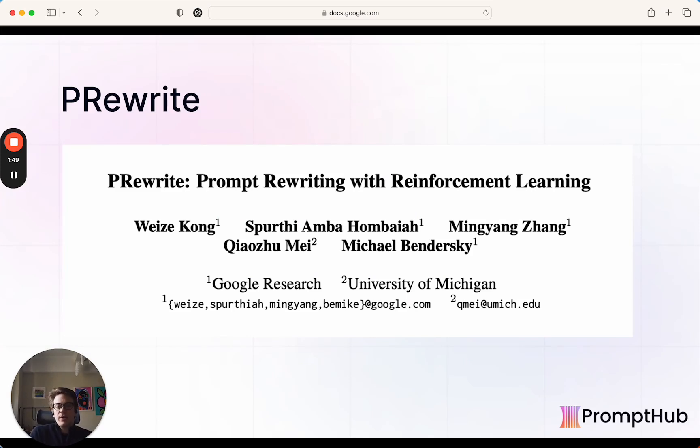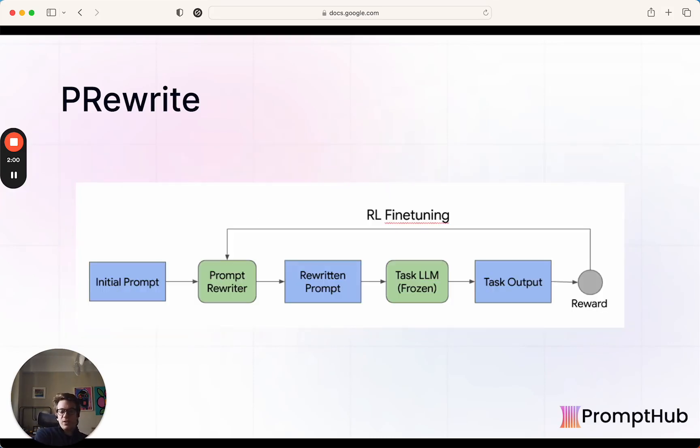So today we're talking about PRewrite, which is a prompt rewriting optimization method using reinforcement learning. Its biggest differentiator is that the LLM used to rewrite the prompts continually gets fine-tuned. And it gets fine-tuned based on a certain reward, meaning that it aligns with the outputs getting better.